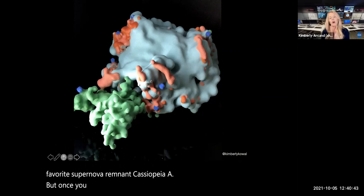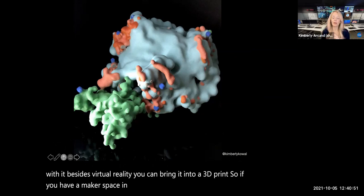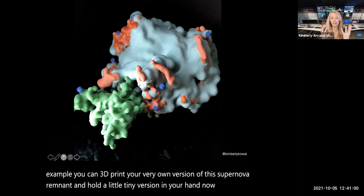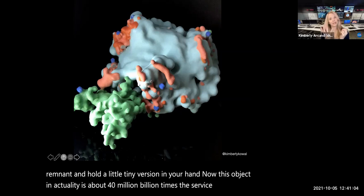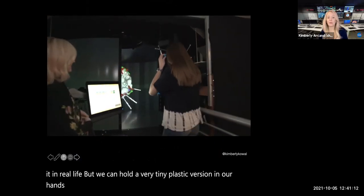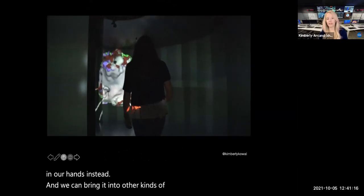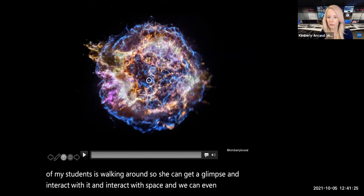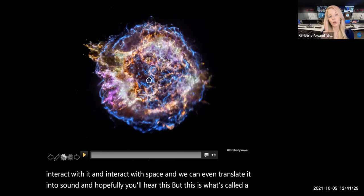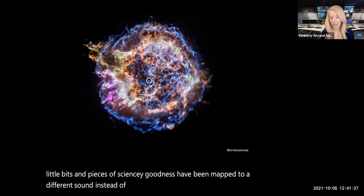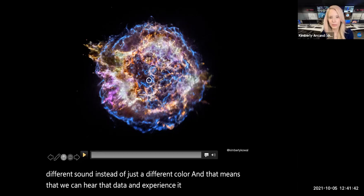But once you have that 3D model, you can do all sorts of things with it besides virtual reality. You can bring it into a 3D print. So if you have a makerspace in your school or in your library, for example, you can 3D print your very own version of this supernova remnant and hold a little tiny version in your hand. Now this object in actuality is about 40 million billion times the surface area of our sun and planets. So it's really, really massive and we can't ever hold it in real life, but we can hold a very tiny plastic version in our hands instead. And we can bring it into other kinds of systems like VR here. One of my students is walking around so she can get a glimpse and interact with it in an interactive space. And we can even translate it into sound. And hopefully you'll hear this, but this is what's called a data sonification, where each of those chemical elements, those little bits and pieces of sciency goodness have been mapped to a different sound instead of just a different color. And that means that we can hear that data and experience it in a different way.